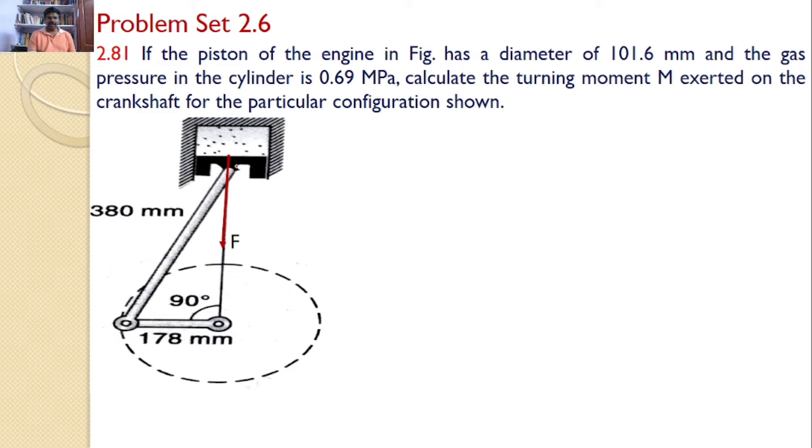In this, the diameter of the piston is given as 101.6 mm and the gas pressure is given as 0.69 megapascals. Our interest is to find the moment exerted on the crankshaft.